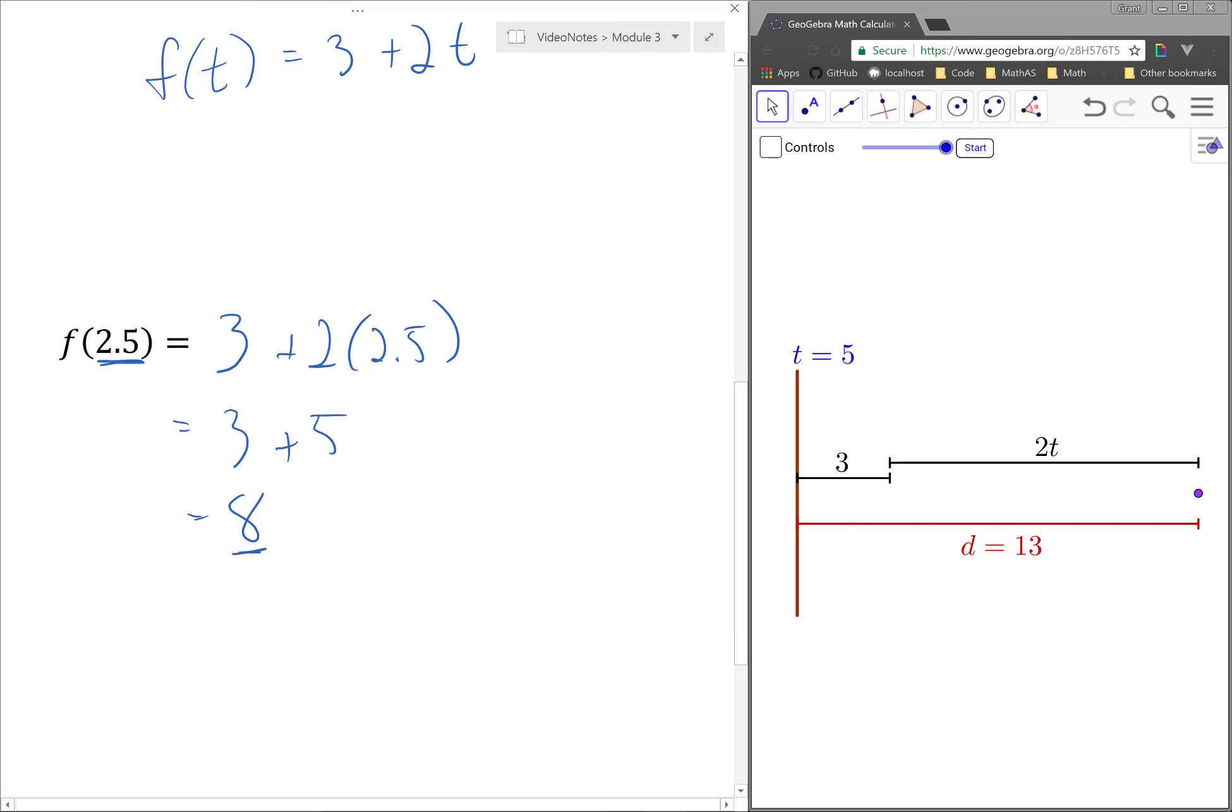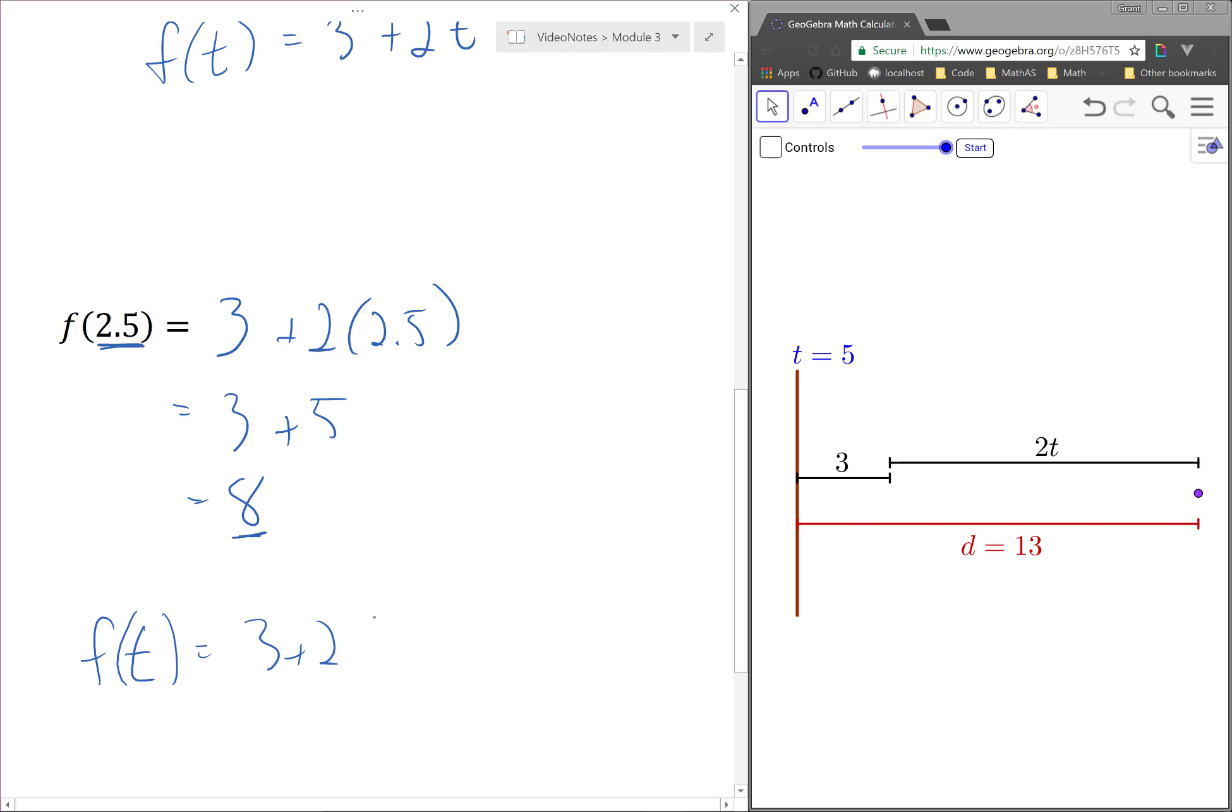In general, if the particle has been traveling for t seconds, then the particle is f of t, which equals 3 plus 2t, meters away from the wall.